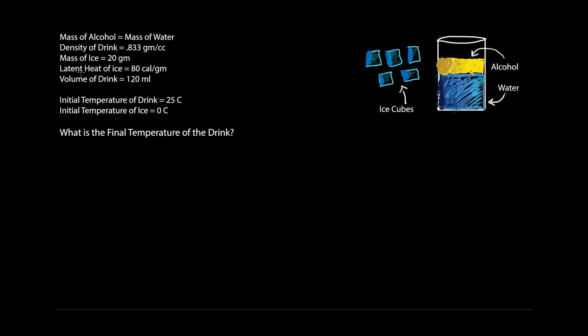Mass of ice is 20 grams. Latent heat of ice is 80 calories per gram. Volume of the drink is 120 ml. Initial temperature of the drink is 25 degrees Celsius and the temperature of this ice is 0 degrees Celsius. They are asking that when we mix this ice and put it into this drink and when all the ice melts, what is the final temperature of the drink?